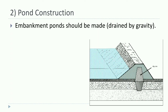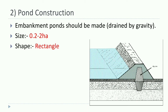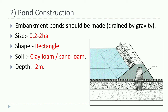For pond construction, an embankment pond should be built that can be drained by gravity. Pond size should be 0.2 to 2 hectares, shape should be rectangular, soil should be clay loam or sandy loam, and depth should be 2 meters.